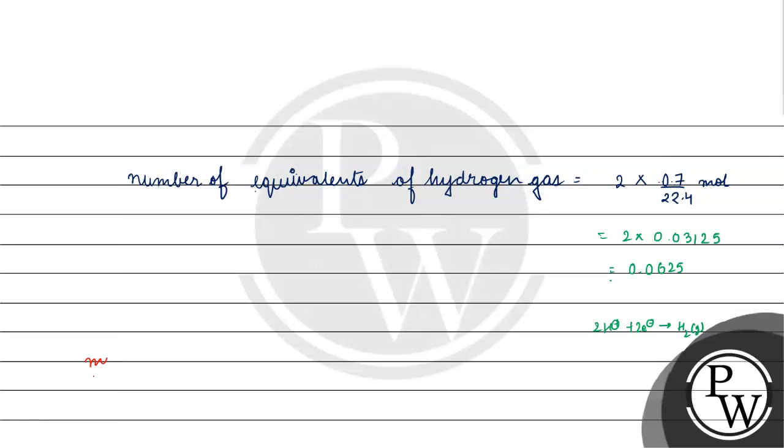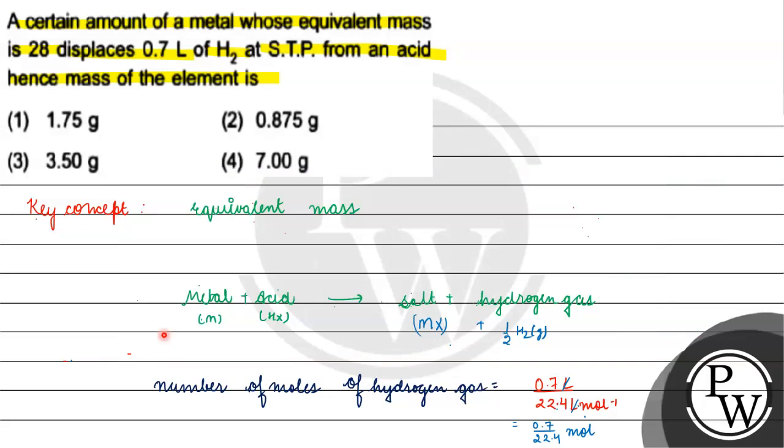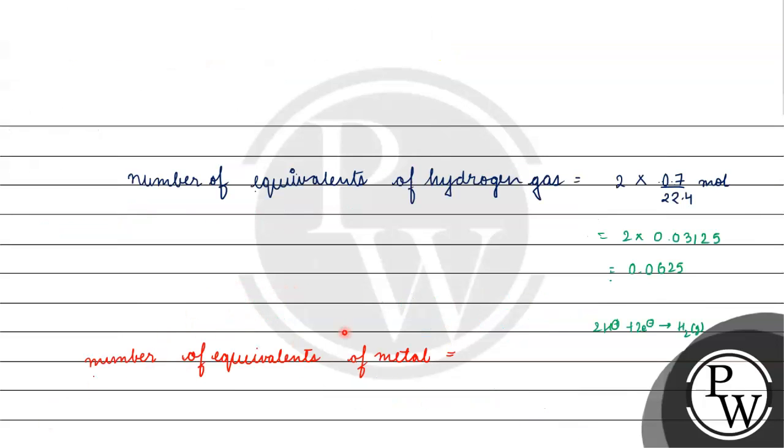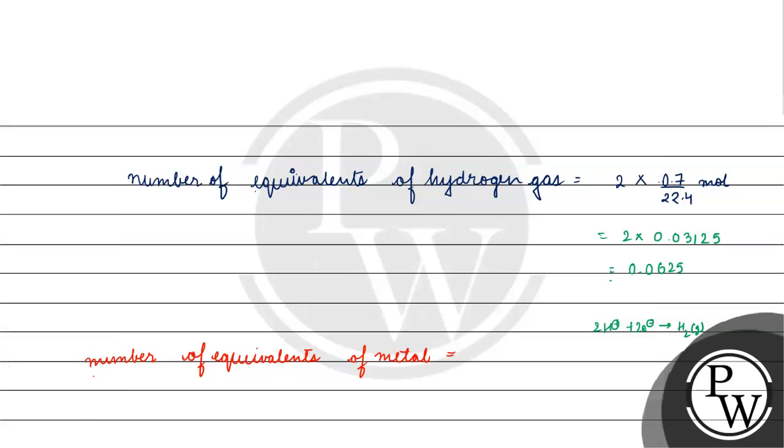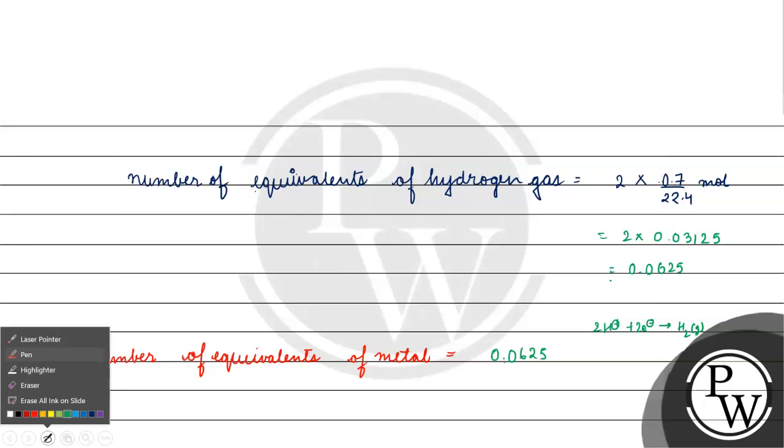Now, if we talk about number of equivalents of metal, it will be equal to number of equivalents of hydrogen gas. We are saying this because if we look at this reaction, we can say that number of equivalents of metal will be equal to number of equivalents of hydrogen gas. How much? 0.0625 equivalents.